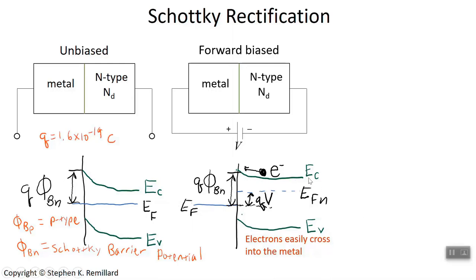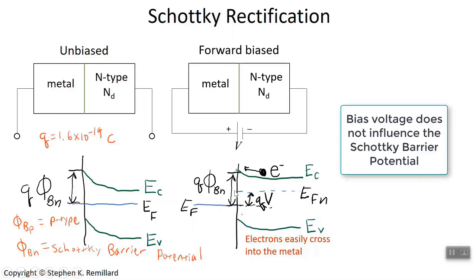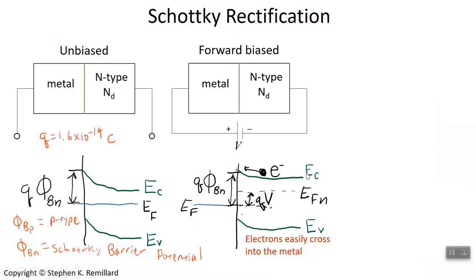As a result, the hill that electrons have to climb to get over the junction becomes less steep. The Fermi energy is well defined inside the metal, so the conduction band edge at the interface is also well defined — raised by q·φ_bn above the metal's Fermi energy. The bias voltage has no influence on this potential difference at the interface. With the reduced bending, electrons have less of a barrier to cross and can more easily make it into the metal.